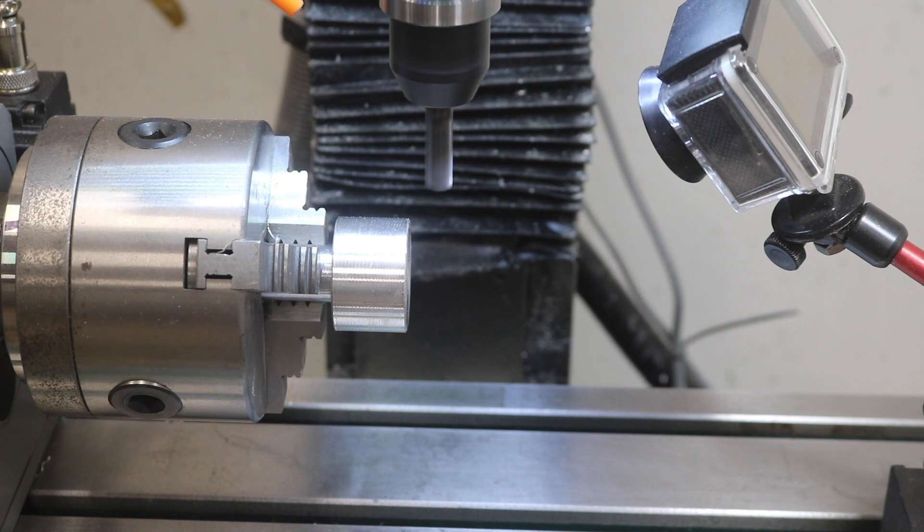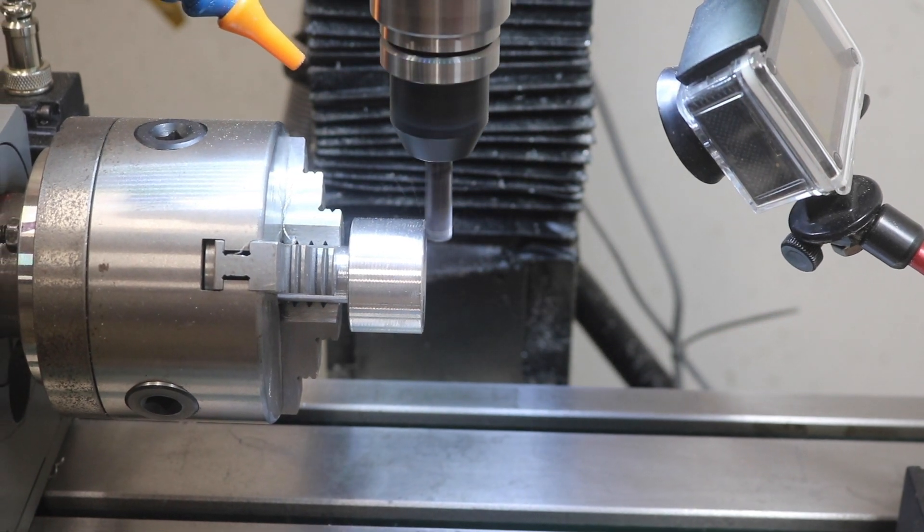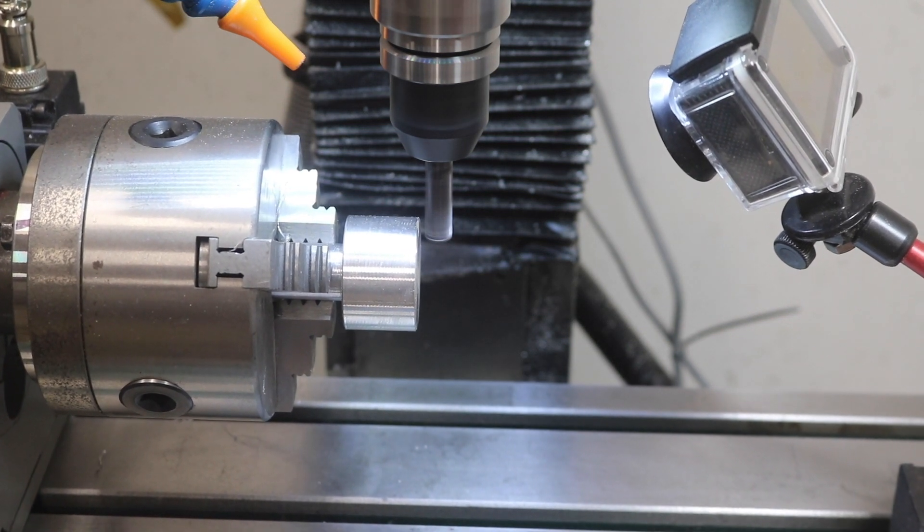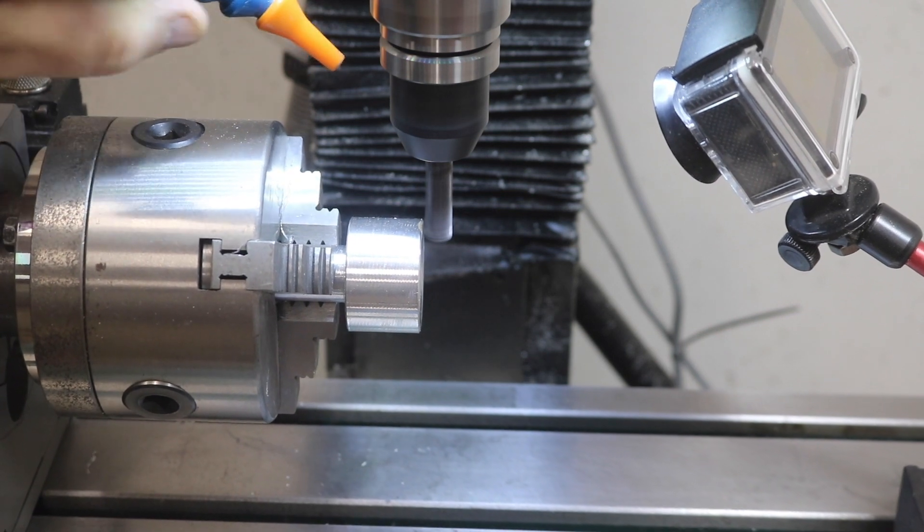I'm just running a 2d adaptive toolpath to machine out a 200 thou deep pocket on the side of this part. I'm using a 3 eighths inch 4 flute carbide roughing end mill, which in my experience will handle just about anything I've thrown at it.